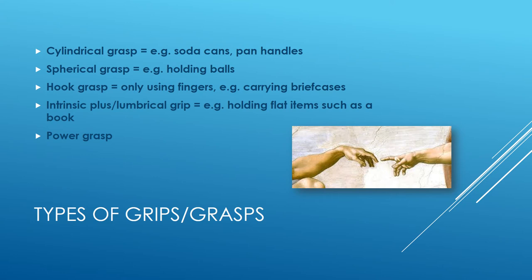Then the intrinsic plus, or lumbrical grip, is holding a flat item such as a book between your fingers and your thumb when you read.